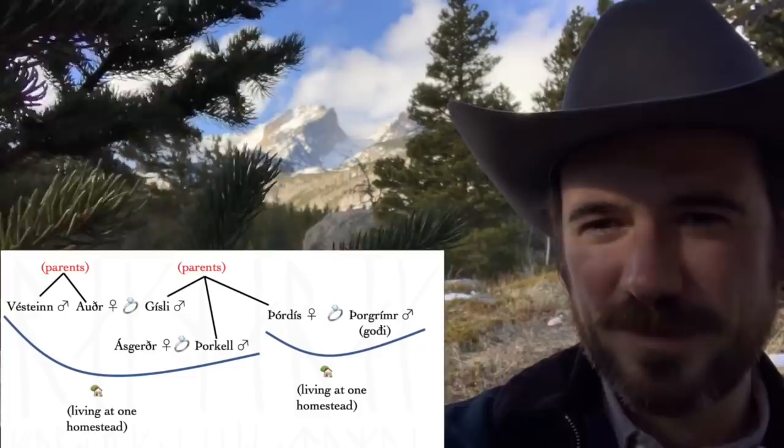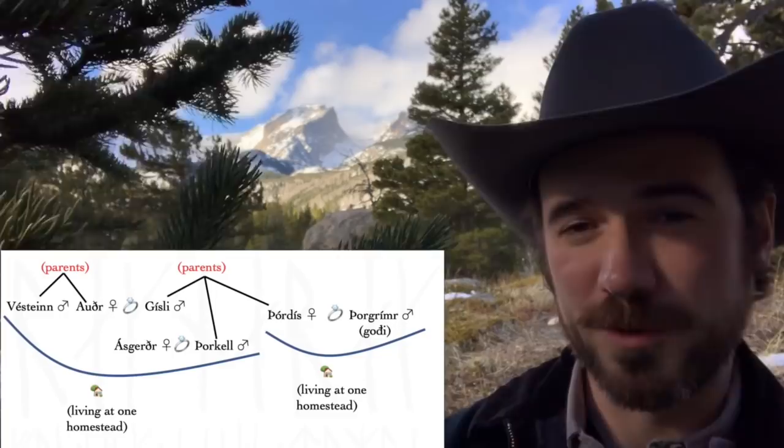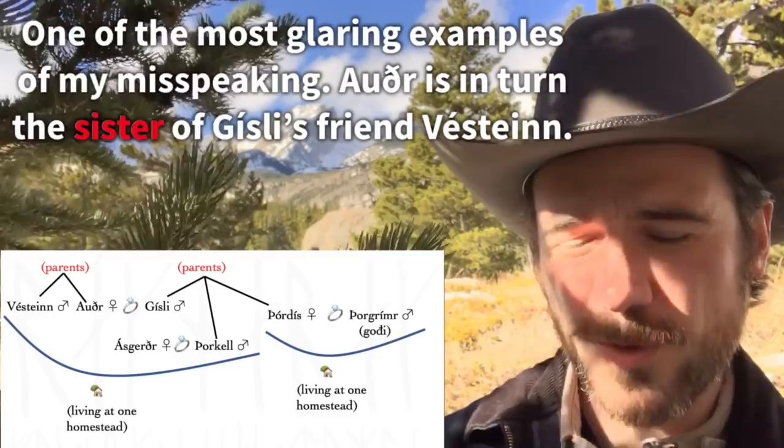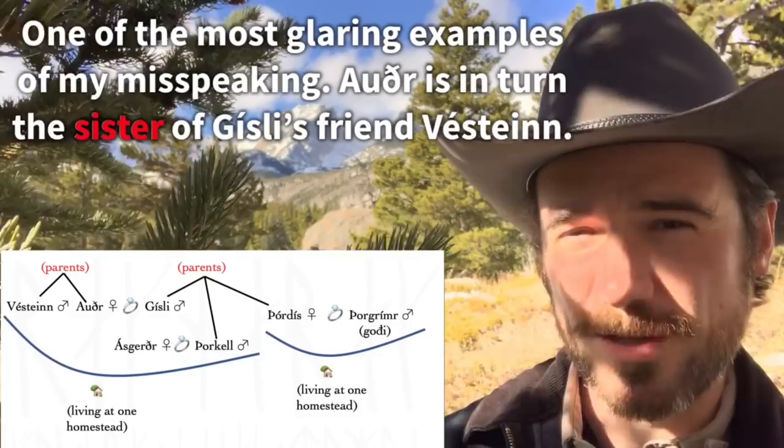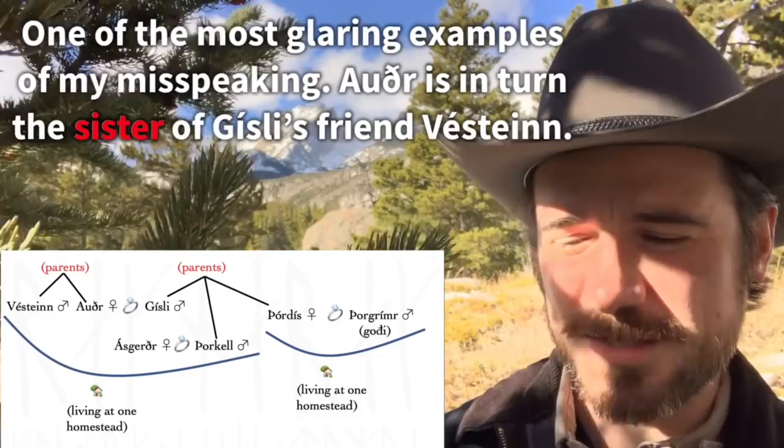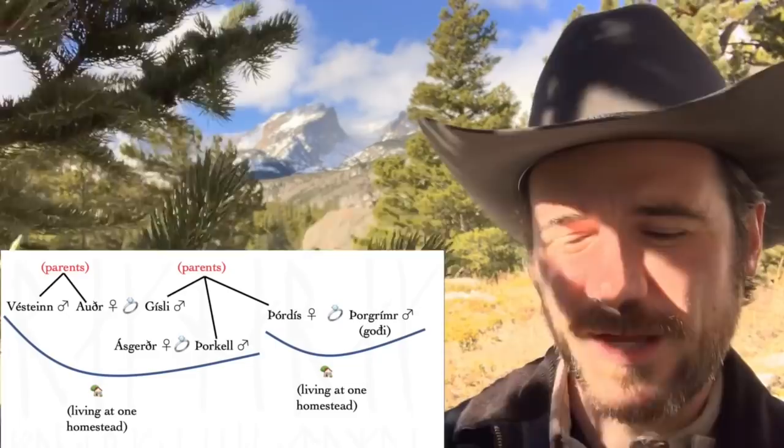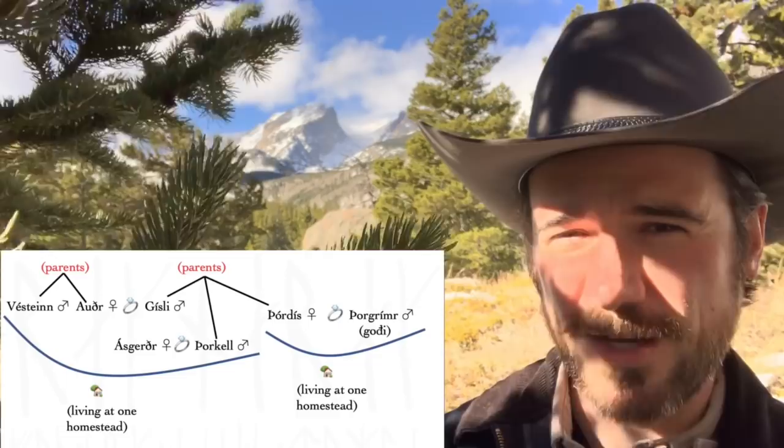Now, Gísli is married to a woman named Auðr. She is in turn, or rather her brother Vestáin is a close friend of Gísli, so he's quite close to his brother-in-law. Þórkell is married to the woman Ásgerðr, and then Þórðis is married to a local goði, a local leader, sort of a combined chieftain judge in early Iceland, and his name is Þórgrímr. Now Þórðis lives with Þórgrímr at a nearby farm, but Gísli, his wife and her brother, and his brother Þórkell and his wife, all live at Gísli's farm.